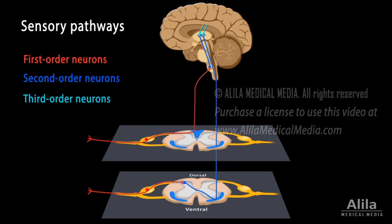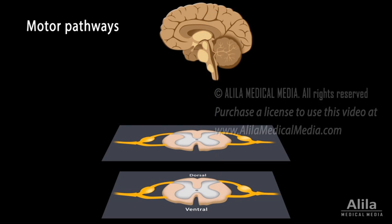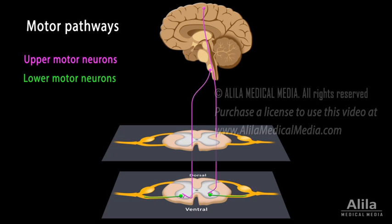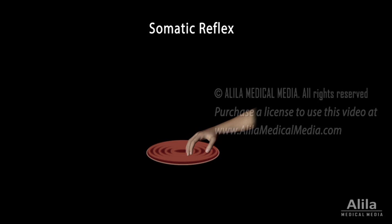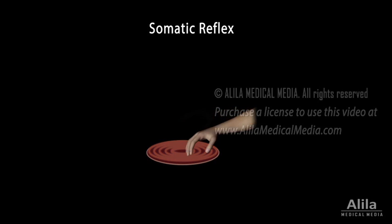Third-order neurons conduct the information the rest of the way to the sensory cortex. A motor pathway usually involves two neurons. An upper motor neuron starts in the motor cortex or brainstem, and a lower motor neuron continues from the brainstem or spinal cord. They conduct motor instructions down along a specific descending tract. The axons of lower motor neurons exit the cord via the ventral root of the spinal nerve, where they continue as motor fibers to affect your organs. The spinal cord is also responsible for fast, involuntary responses of skeletal muscles, called somatic reflexes.